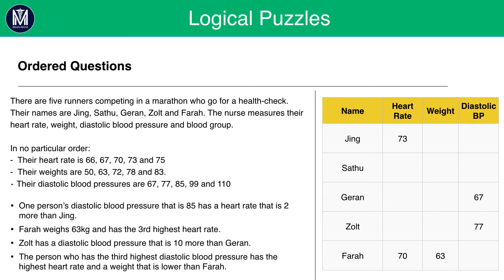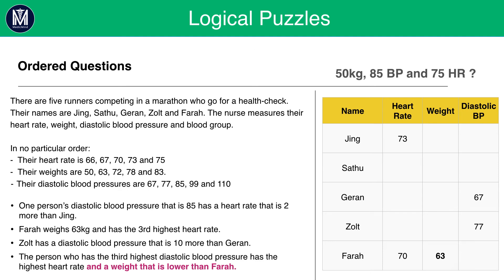Next, we should look at the information we've put in so far and remember what we are trying to work out — Satu's weight. From the table so far it could be argued we are far from it, however the information already given will help us fill in the remaining gaps. The last line tells us the person who has the third highest diastolic blood pressure has the highest heart rate and a weight lower than Farah. Farah has a weight of 63 kilograms, and the only weight lower than 63 is 50. So this unknown person has a weight of 50 kilograms, the third highest diastolic blood pressure of 85, and the highest heart rate of 75.